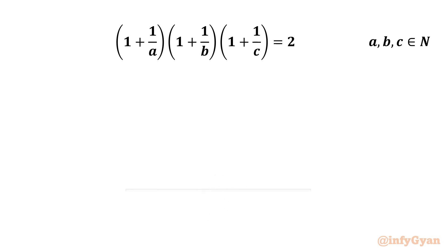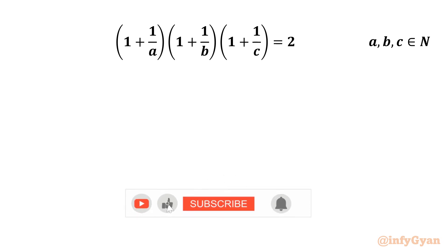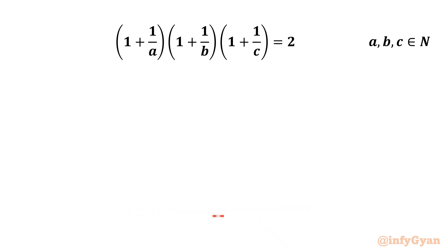Welcome to Infigyan friends. Today in this video we have one very interesting question from the British Math Olympiad. We have (1 + 1/A)(1 + 1/B)(1 + 1/C) = 2, given that A, B, C are natural numbers.